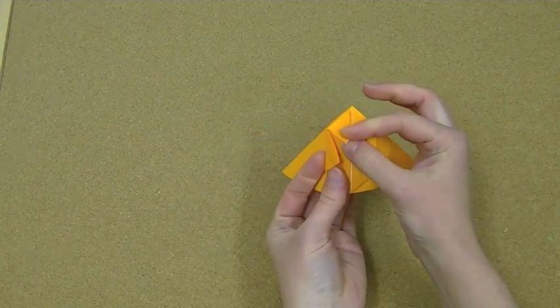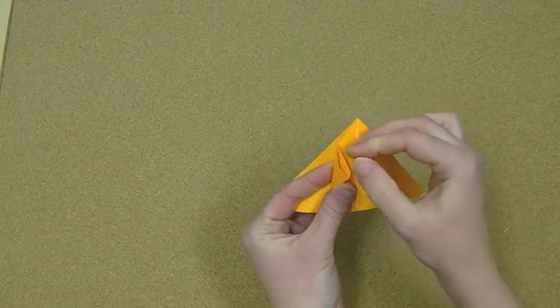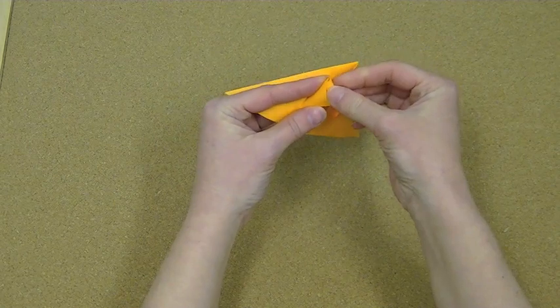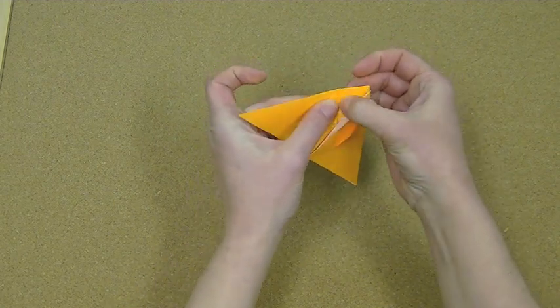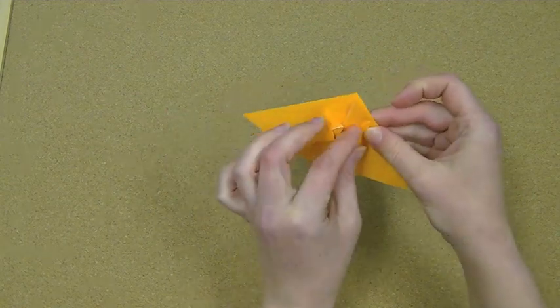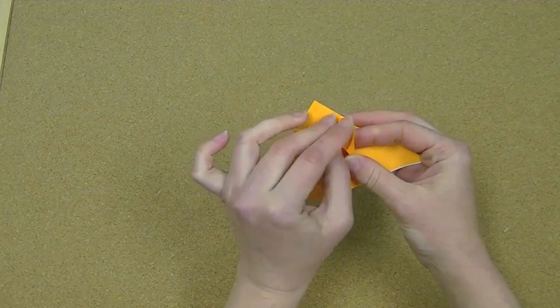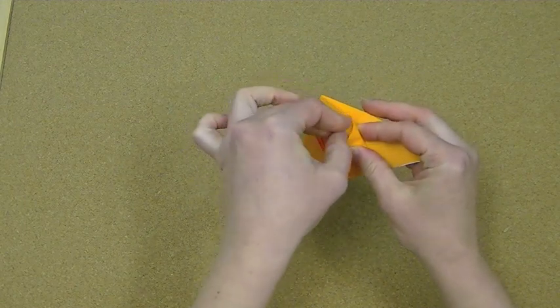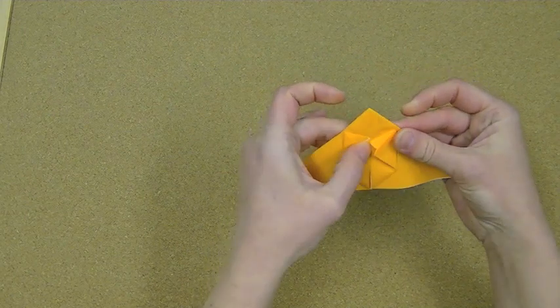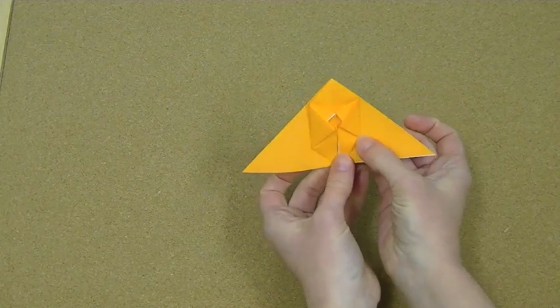Now these top little creases here I'm going to tuck into these pockets that I have from that fold I just made. So if you just kind of open that up and slip this in as far as you can and then just smush it down to make a nice crease there like so. And do the same thing on this side. So I'll just open up that pocket a little bit and just stick this in. So that you get something that looks like this.